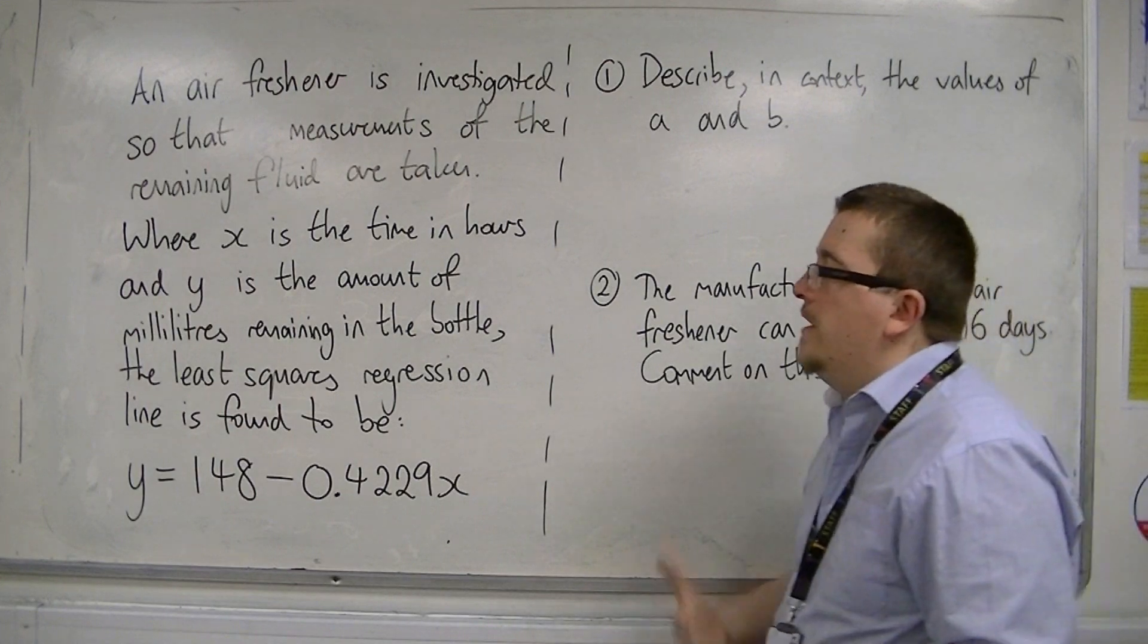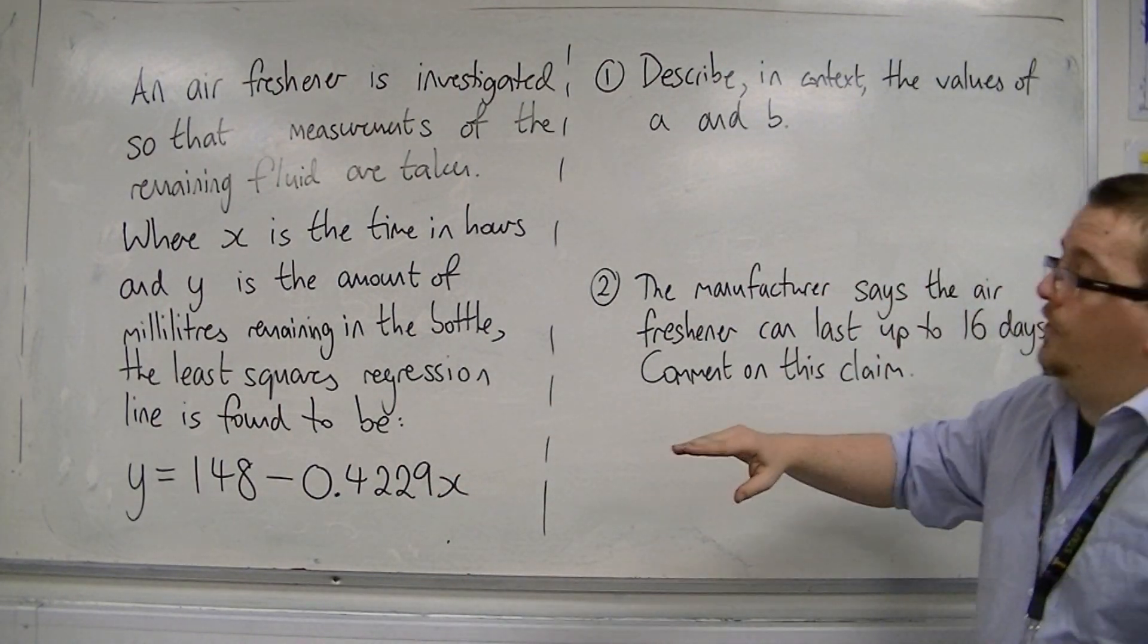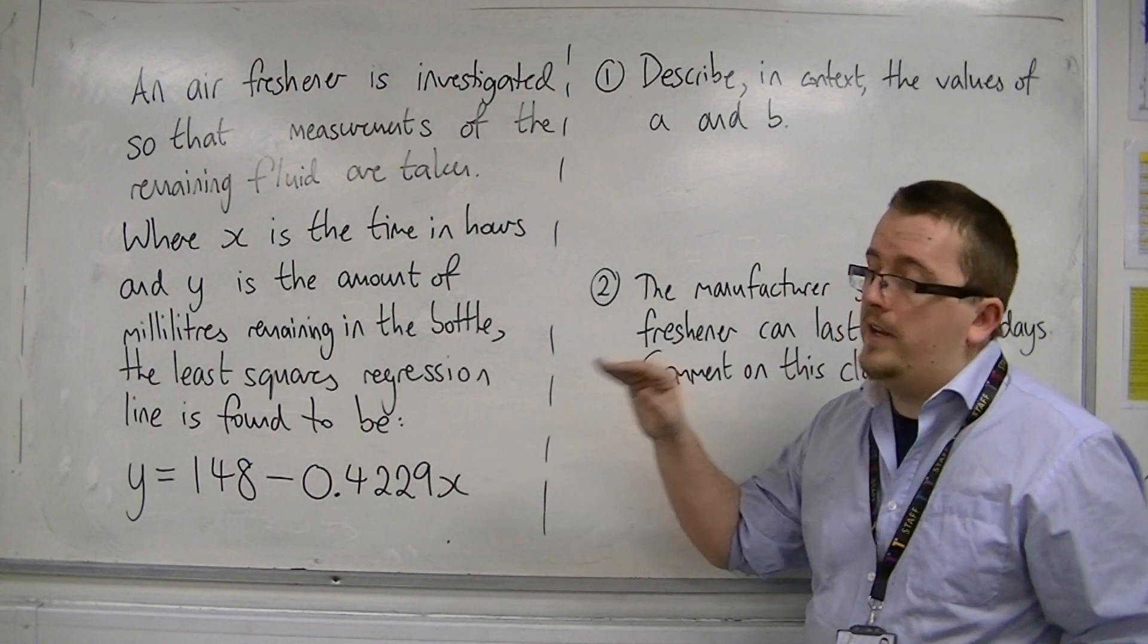Where x is the time in hours and y is the amount of milliliters remaining in the bottle, the least squares regression line is found to be y = 148 - 0.4229x.